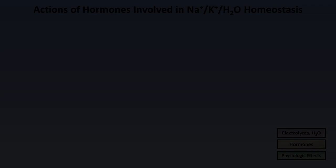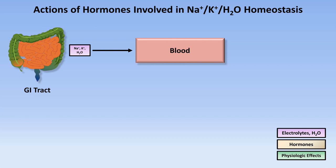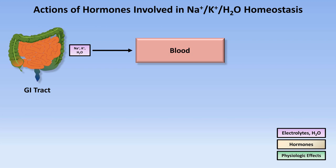So let me review the actions of the hormones involved in sodium, potassium, and water homeostasis. The first step is that sodium, potassium, and water is absorbed by the GI tract and find their way into the blood. When the blood is cycled through the kidneys, a significant portion of that sodium, potassium, and water is freely filtered through the glomeruli. Some portion of each of those will be reabsorbed in the tubules and collecting ducts.